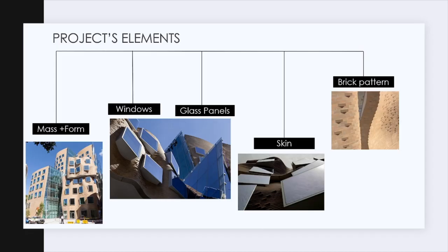So the project's elements are broken down into five elements. The first element is the mass and form. The second is the windows. The third is the glass panels. The fourth is the skin. And lastly, the fifth is the brick pattern.